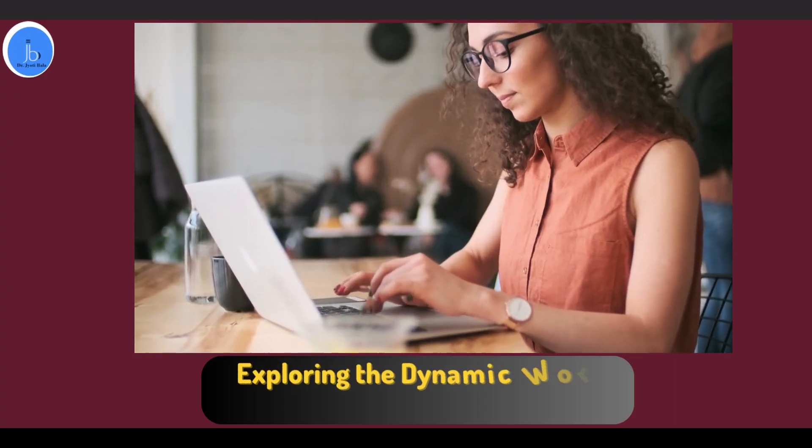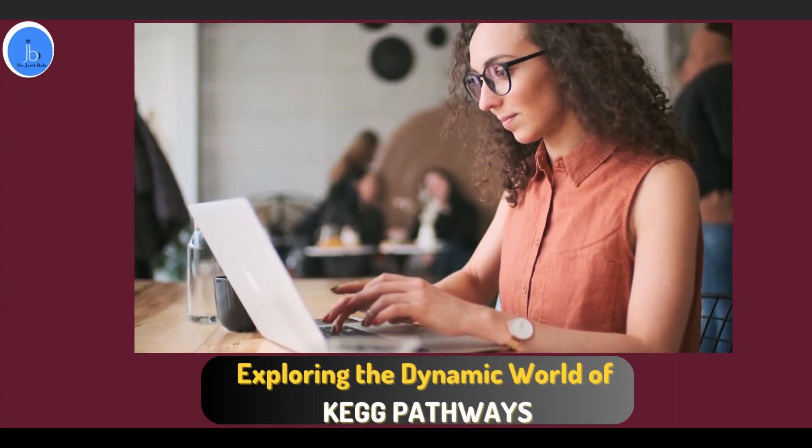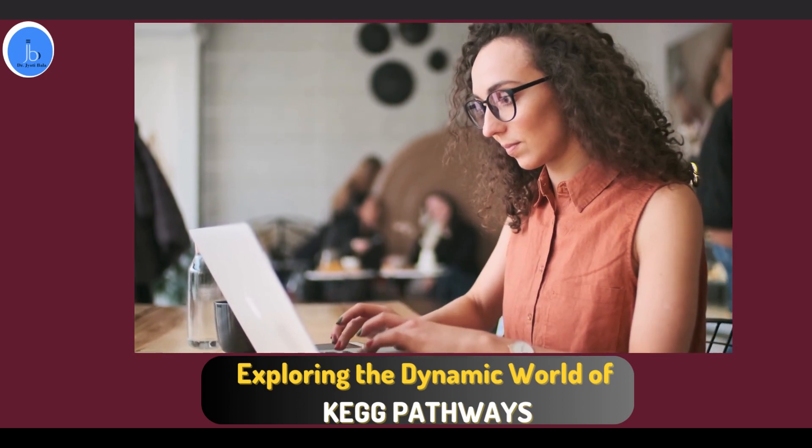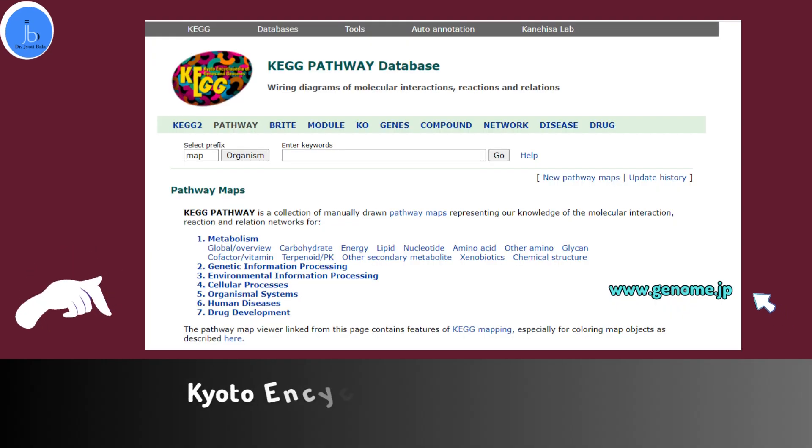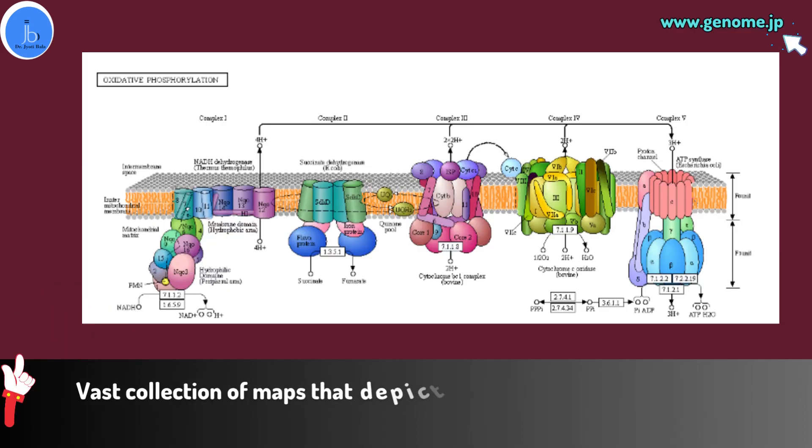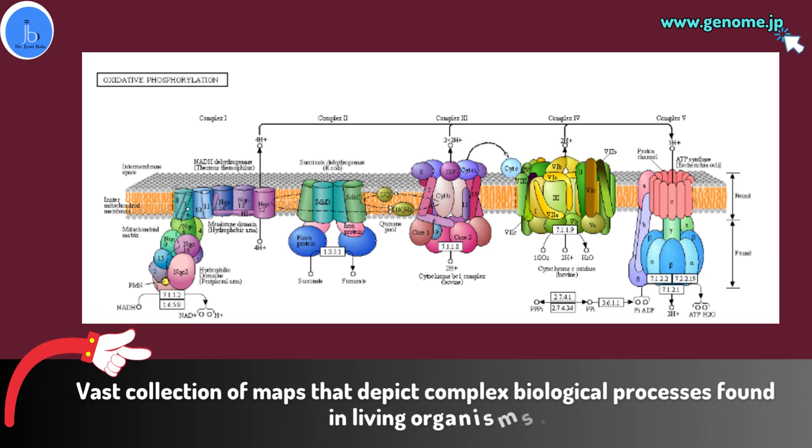Hi everyone, welcome to this session. In this session we will be discussing KEGG Pathways. KEGG stands for Kyoto Encyclopedia of Genes and Genomes, which is a vast collection of maps that depict complex biological processes found in living organisms.